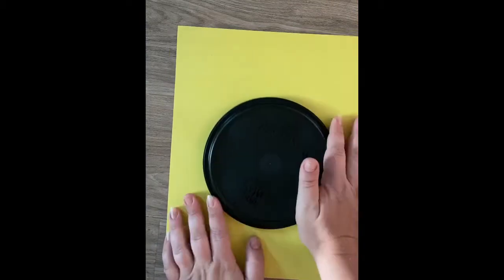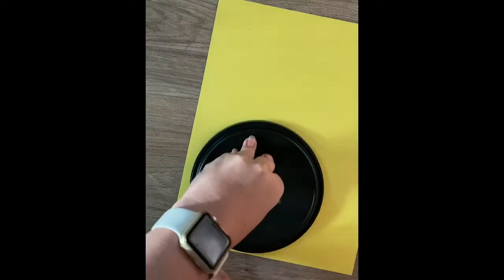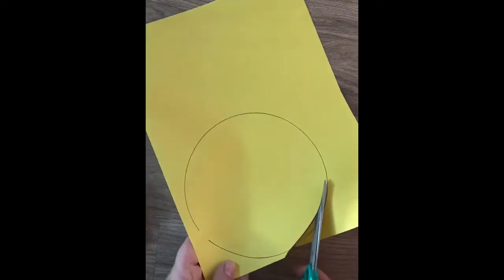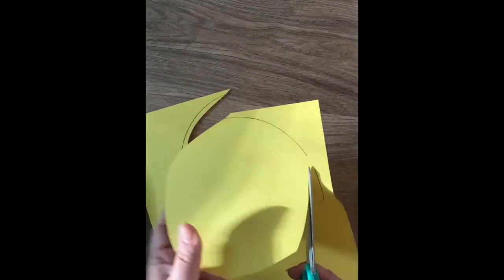Next I'm going to be making the cheese layer of my pizza. I traced the same circle but this time when I cut I'm going to cut a little bit on the inside of the circle so that it's slightly smaller than my crust.